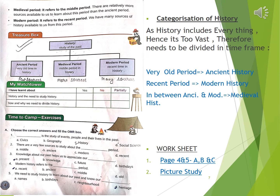The last point is the categorization of history. As we discussed, history includes everything, so it is too vast — our past is too vast and we cannot learn it as a whole. That is why historians have divided history to make it easier to study, dividing it into time frames. Historians have divided history into three periods.